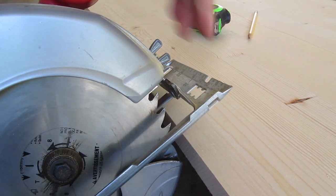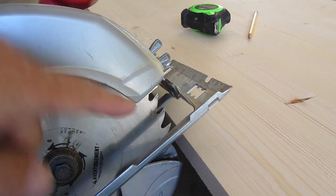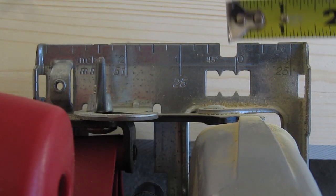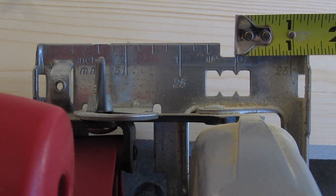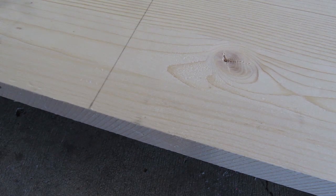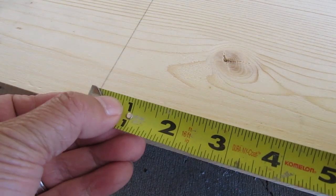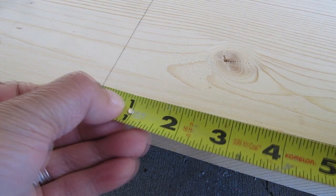On the circular saw, please realize that the blade is offset from the edge of the guide. I'll be using the guide on the right which has a 1.5 inch offset. So on my board I'm going to make two marks 1.5 inches from my cut line.